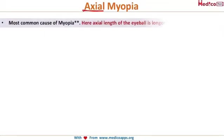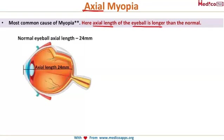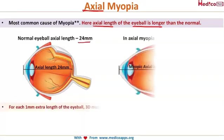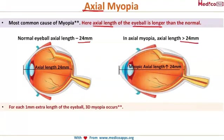Axial myopia, as the name suggests, is something to do with the axis of the eye. This is the most common cause of myopia. The axial length of the eyeball is much longer than normal, which is why the cornea and lens are unable to focus the image on the retina, because the retina is farther away. The normal eyeball length is 24 millimeters, so in axial myopia it is greater than 24 millimeters.